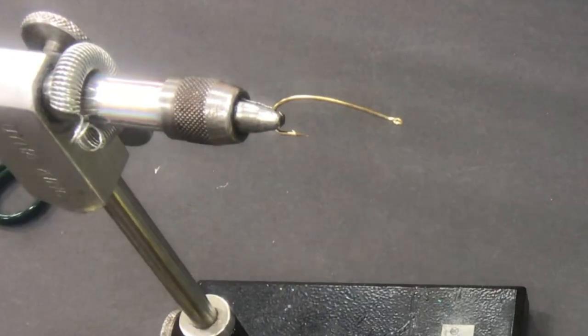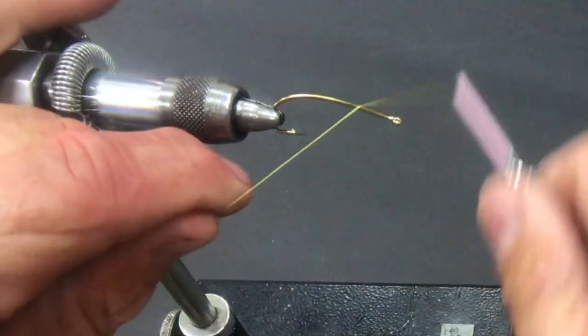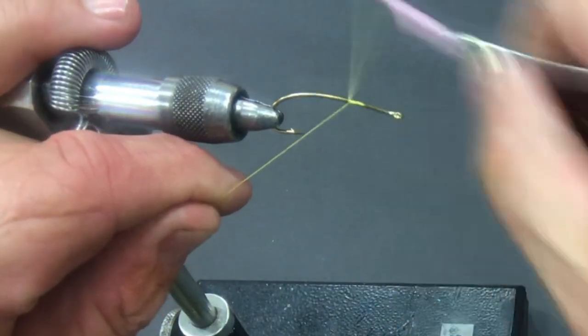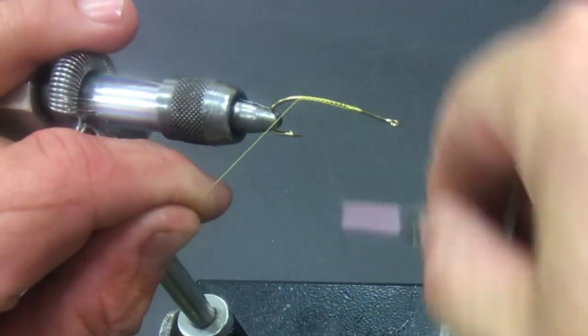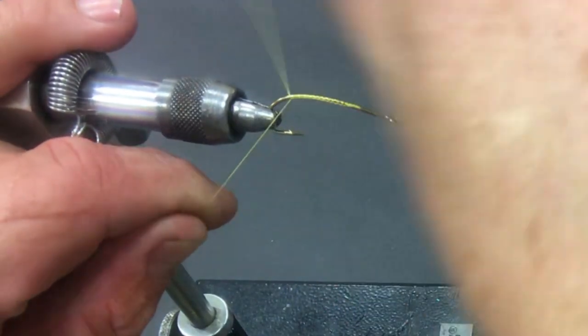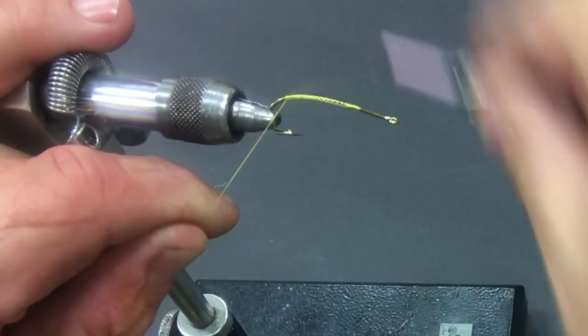Let's get started. We've got the hook in the vise. We're gonna go ahead and attach our thread, take it to the back of the bend like this. Trim off this tag end.